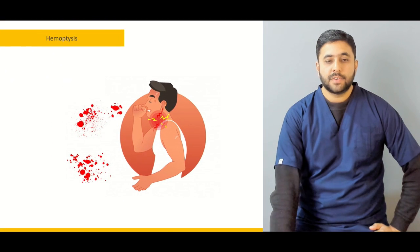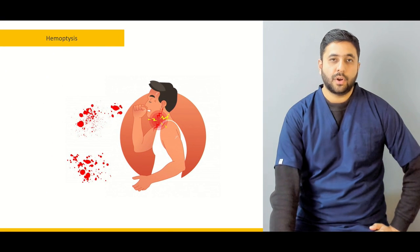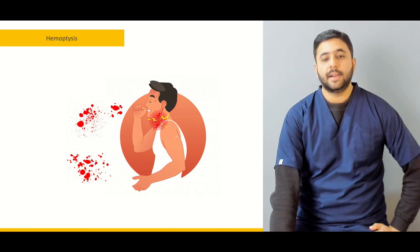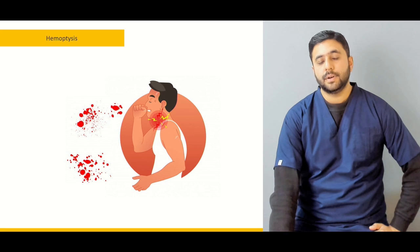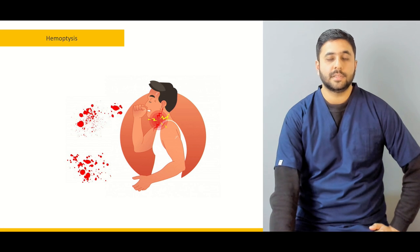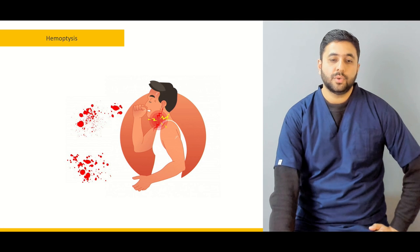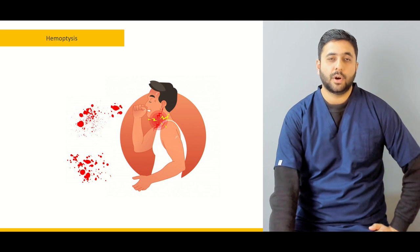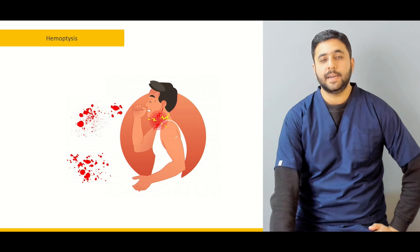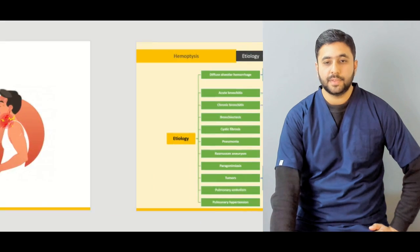Then afterwards, after the discussion of chronic cough, we are going to focus on hemoptysis, which is a cough along with blood. We are going to define what hemoptysis is, what are the various types, and how do we characterize or classify it based on the amount of the bleed.